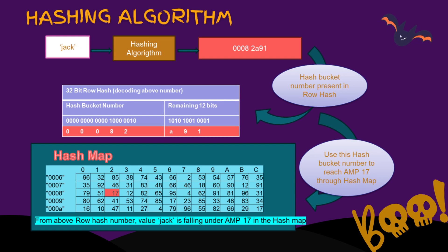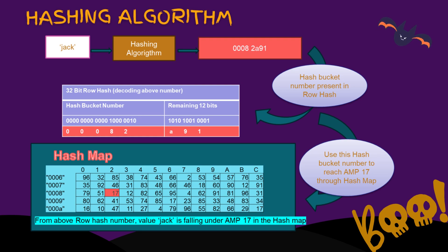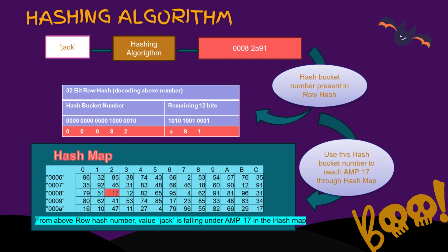Combining all the theories previously mentioned, the diagram sums up as follows. The value Jack is hashed through complex formulas — the hashing algorithm — generating a value of 0x00082A91. This 32-bit value is called the Row Hash. Picking the first five digits, 00082, gives the Hash Bucket Number. This hash bucket number is present in a matrix-like structure called the Hash Map. Using the hash bucket number and hash map combination, we reach AMP number 17 — so the value Jack is stored under AMP 17.